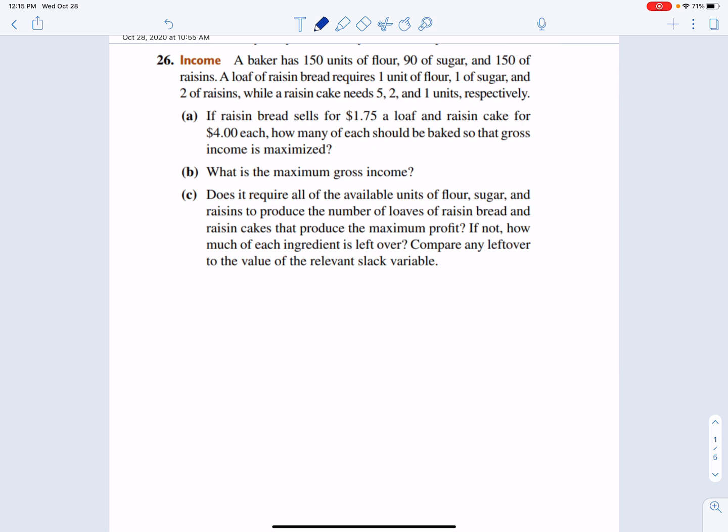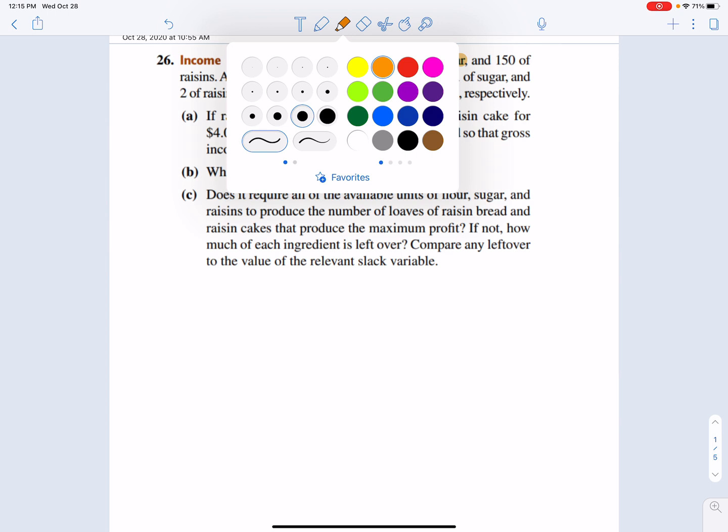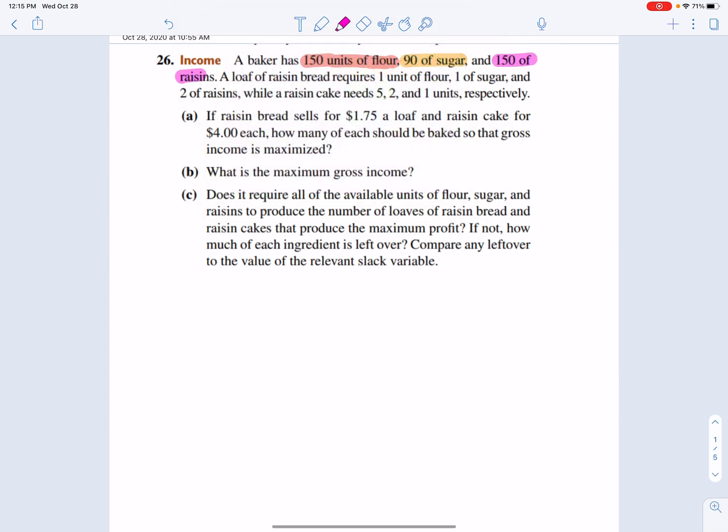All right, so welcome back. So what you notice we have is we have resources here. We have 150 units of flour, we have 90 of sugar, and we have 150 of raisins.